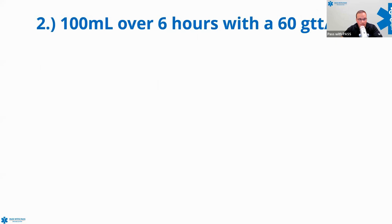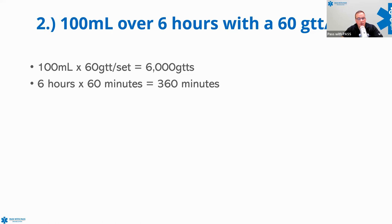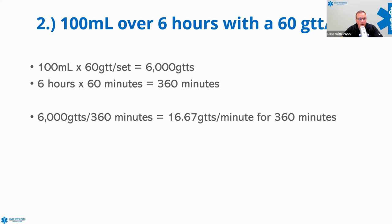The next question: 100 milliliters over six hours with a 60-drop set. Same process: 100 times 60 equals 6,000 drops — that's the total drops needed. Six hours times 60 minutes equals 360 minutes. So I need to give 6,000 drops over 360 minutes, which comes out to 16.67 drops per minute. Since 0.67 is above 0.5, we round up to 17 drops per minute.